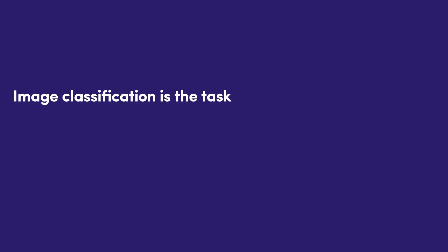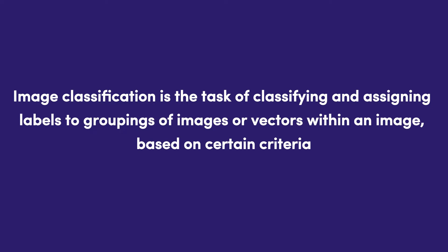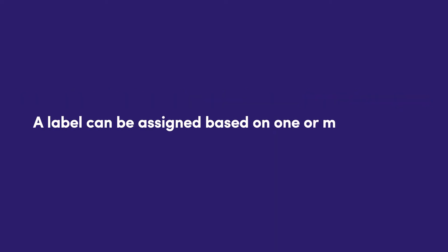Image classification is a task of classifying and assigning labels to groupings of images or vectors within an image, based on certain criteria. A label can be assigned based on one or more criteria. Image classification analyzes photos with AI-based deep learning models that can identify and recognize a wide variety of criteria, from image contents to the time of day.